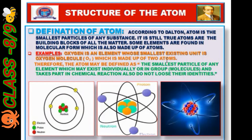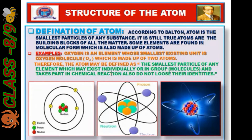Oxygen exists as O2, which is made up of two atoms: O plus O. Therefore, the atom may be defined as the smallest particle of any element which may exist individually or in a group — that means as molecules — and take part in chemical reactions.